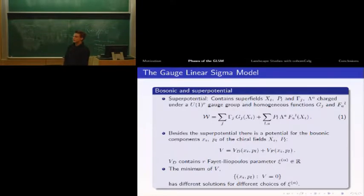How do we get these monads from physics? They're given by a vacuum configuration of a superpotential of a gauge linear sigma model. In this gauge linear sigma model, we have a superpotential which is written here, with superfields charged under R U(1) gauge groups and homogeneous functions Gj and F_alpha.